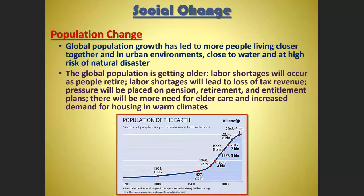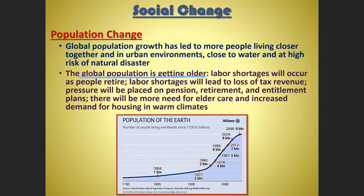Population change: global population growth means people living closer together in cities, near water with high risk of natural disasters. As we discussed in Chapter 13, the global population is getting older — not just in the U.S. but everywhere. This will lead to labor shortages as people retire, loss of tax revenue, pressure on pension and retirement entitlement plans, more need for elder healthcare and assisted living, and increased demand for housing in warm climates.